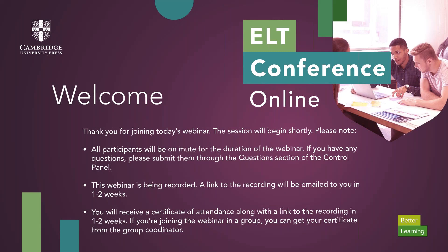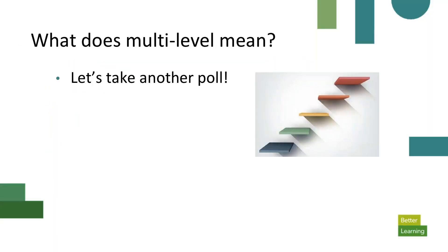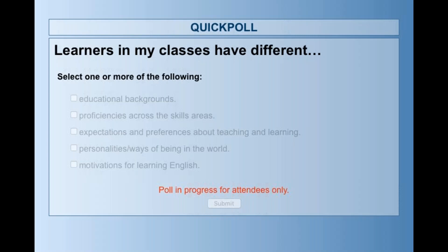I have another poll for you. Sometimes when people think about multi-level classes, the first thing that comes to mind is issues of language proficiency, but we're going to ask you to think more broadly. When you think of multi-level, which of these factors come to mind? Select one or more differences among learners in your setting: different educational backgrounds, different proficiencies across skill areas, different expectations, different personalities or ways of being in the world, different motivations for learning English.